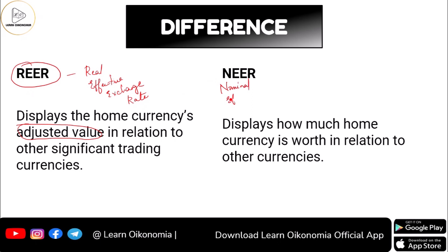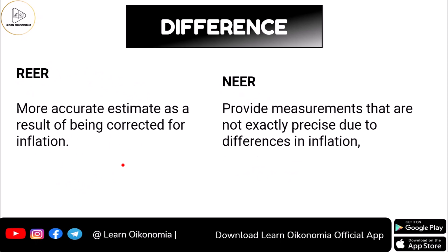The nominal effective exchange rate, or NEER, displays how much the home nation's currency is worth in relation to other currencies. So this shows the actual value — not the adjusted value. Here we have actual value, and there we have adjusted value.